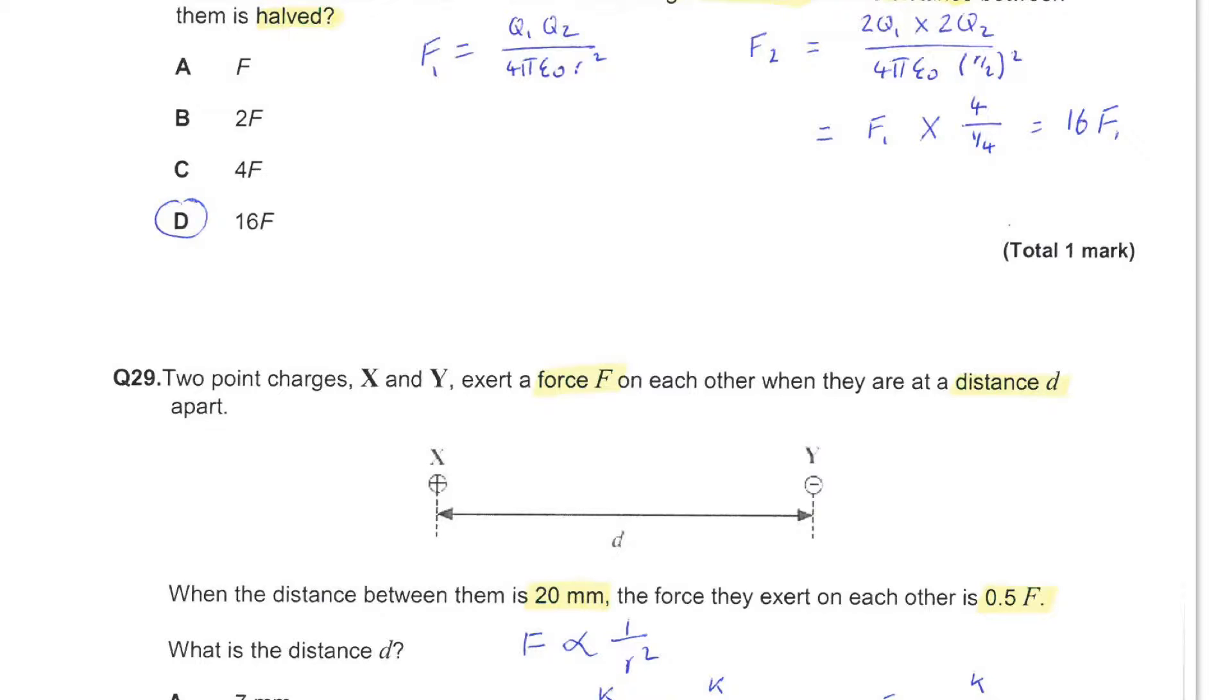So in the first scenario we can consider the force to be F1. And using the equation from the datasheet we have Q1Q2 divided by 4πε0R squared.